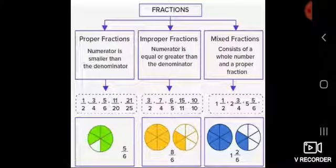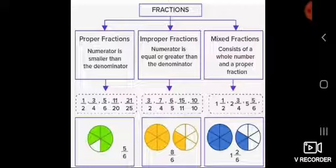Let's start with the first type: proper fraction. What is a proper fraction? The numerator is smaller than the denominator — woh fraction jis mein numerator, denominator se chota hota hai. Look at this example: 1 upon 2, 3 upon 4, 5 upon 6, 11 upon 20, and 21 upon 25.